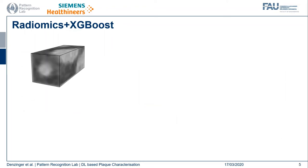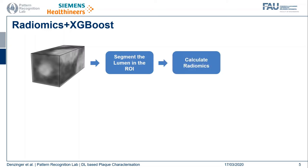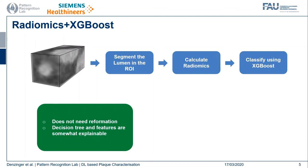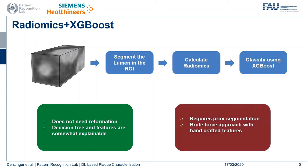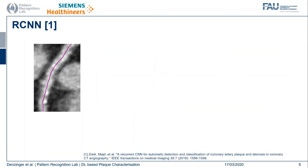The workflow for the radiomics approach looks like this: first, the lumen segmentation is extracted; then the radiomics of this lumen segmentation combined with the CT scan are calculated; then those features get plugged into the XGBoost classifier for final prediction. For this approach, there is no need for reformation or resampling. Since it is a decision tree-based approach with handcrafted features, it is somewhat explainable. However, it is dependent on prior segmentation, and you have to brute-force with handcrafted features in order to get a prediction.